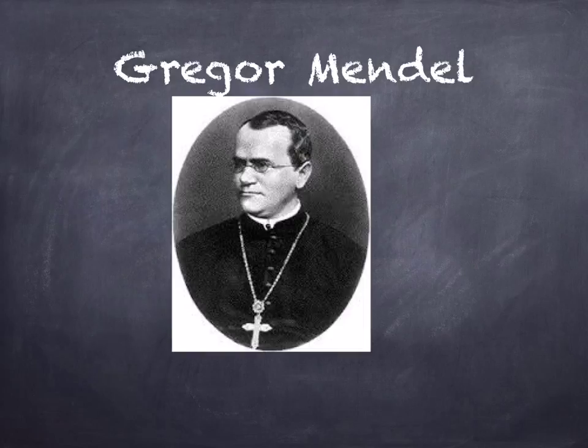It was the rediscovery of the work of a scientist monk called Gregor Mendel which was used to establish the basic laws by which characteristics are inherited. What he did was he did experiments on pea plants to see what traits were inherited in the next generation. We're going to have a look at Mendel's experiments in the next topic.